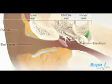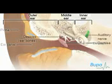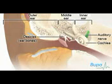Your ear consists of three parts: the outer ear, the middle ear and the inner ear. These all work together to pass sound through your ear and to your brain.